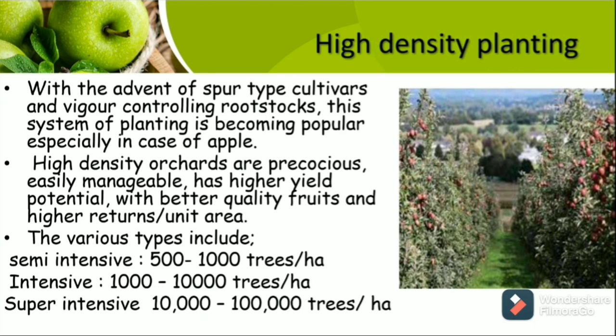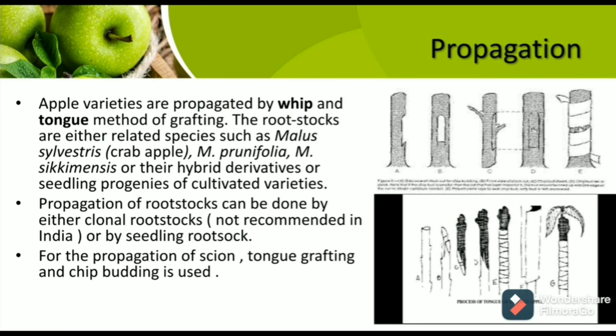The various types of high-density planting in apple include semi-intensive, which includes 500 to 1,000 trees per hectare; intensive, 1,000 to 10,000 trees per hectare; and super-intensive, 10,000 to 100,000 trees per hectare. Apple varieties are propagated through tongue and whip method of grafting. Rootstocks are either related species such as Malus sylvestris, Malus prunifolia, and Malus camiensis, or their hybrid derivatives as seedling progenies of cultivated varieties.